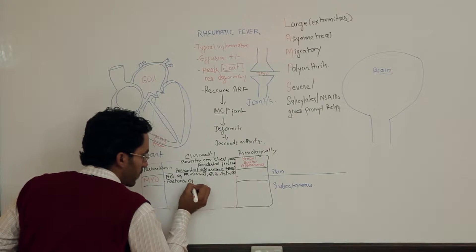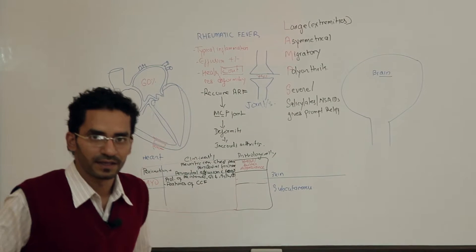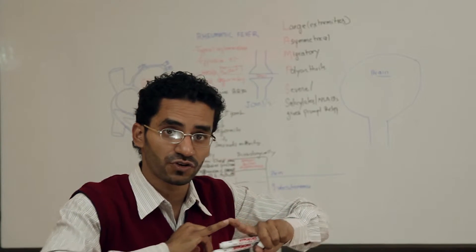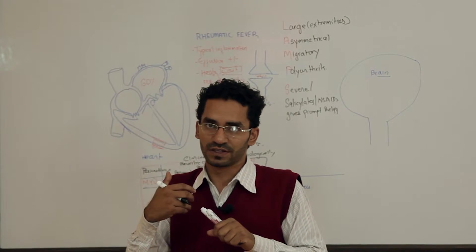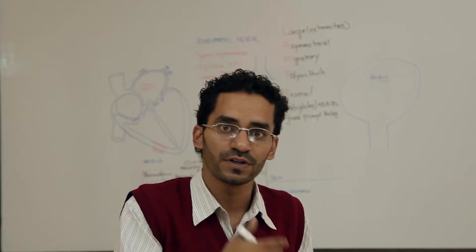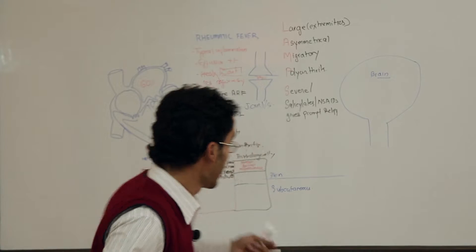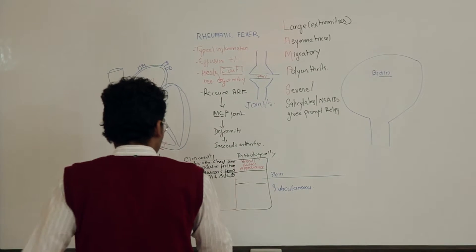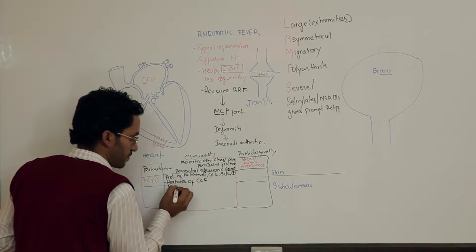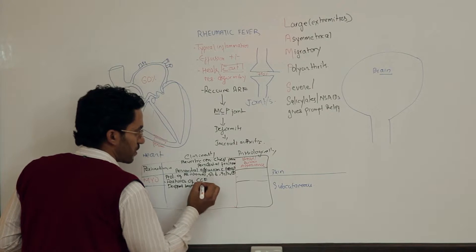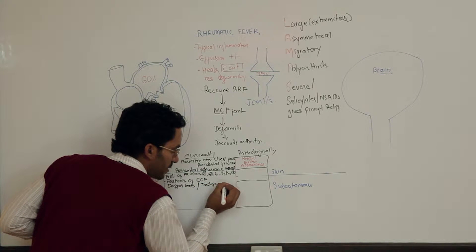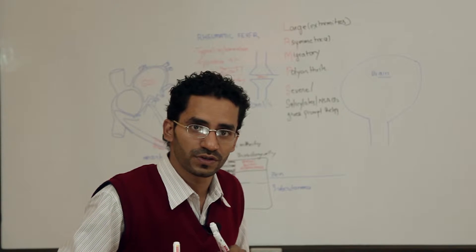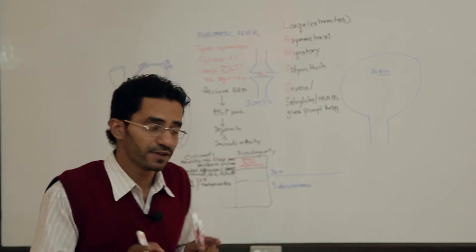The features of congestive cardiac failure: the first point is prolongation of PR interval. There is decrease in S1, the first heart sound. S3 and S4 may be present. The patient may come with features of congestive cardiac failure, and there may be dropped beats.